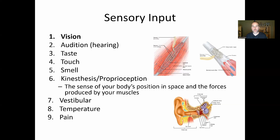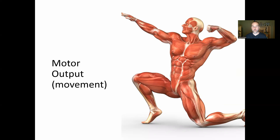For our output, we're really talking about motor output — movement is our primary way of affecting the world. All the wonderful things our brain can think about are for naught unless we can act on the world. If I have a great idea for a book in my head, that's not going to help anyone unless I can write it out with a pencil or type it on a keyboard. So motor output is imperative.